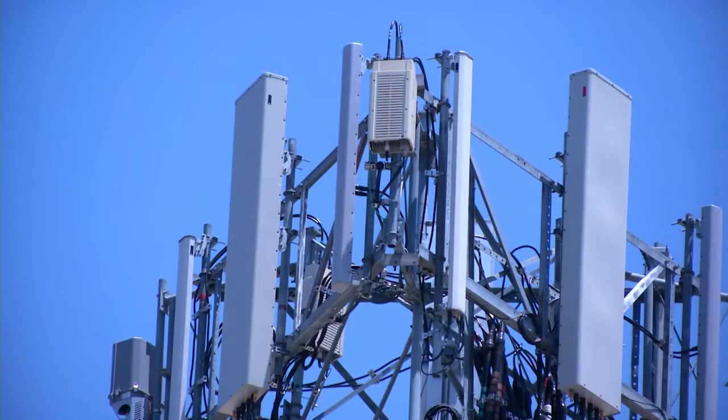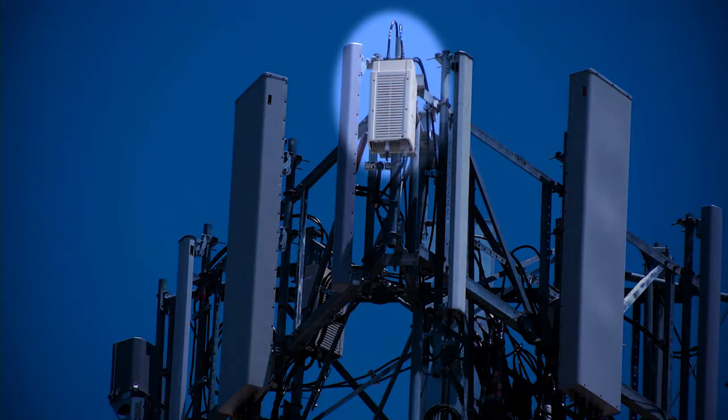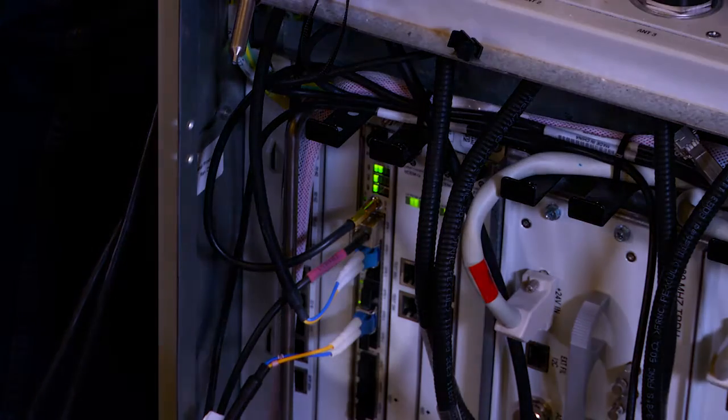A typical remote radio head is shown here with the two antenna ports for a typical 2x2 MIMO operation. This is the fiber between the baseband unit and the remote radio head.